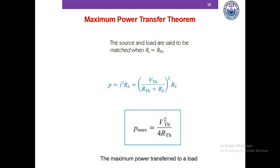The summary of the maximum power transfer theorem: if we set the load resistance equal to the Thevenin resistance of the rest of the network, the power delivered to the load becomes maximum. If we set it higher or lower than RTH, the power will be lower than the maximum value. The maximum power is equal to VTH² divided by 4RTH.